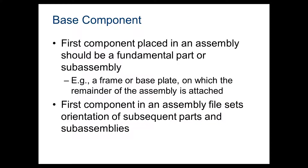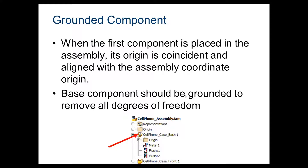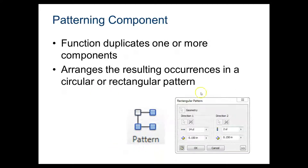Your base component — the first component placed in an assembly — should be a fundamental part or sub-assembly. The first component sets the orientation of all other parts, so you have to think about which part you want to be the base component before inserting it into an assembly. When placed, its origin is coincident and aligned with the assembly coordinate origin. The base component should be grounded to remove all degrees of freedom.